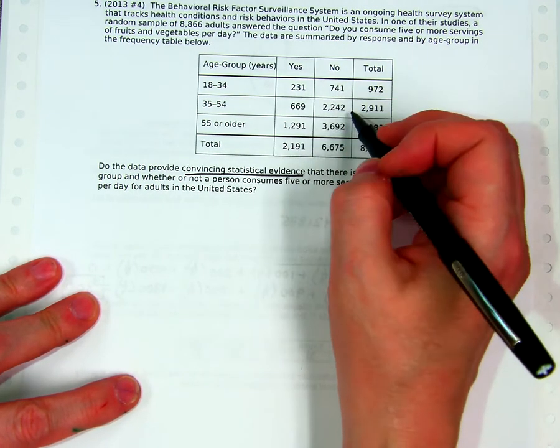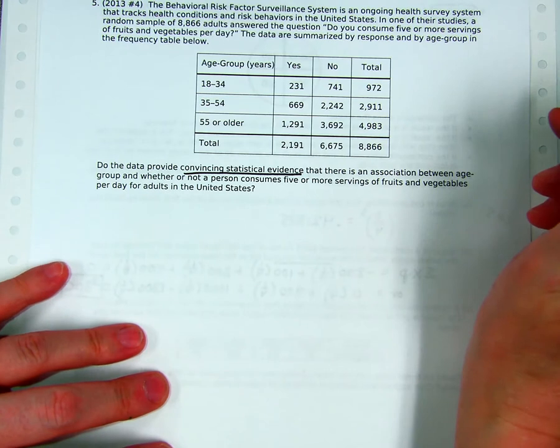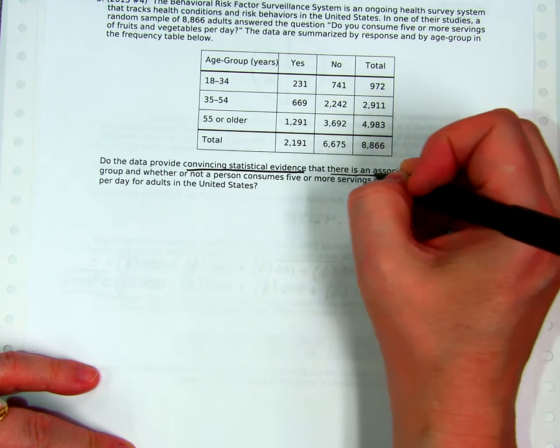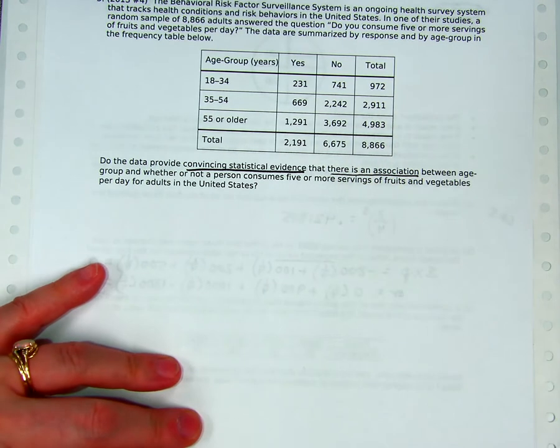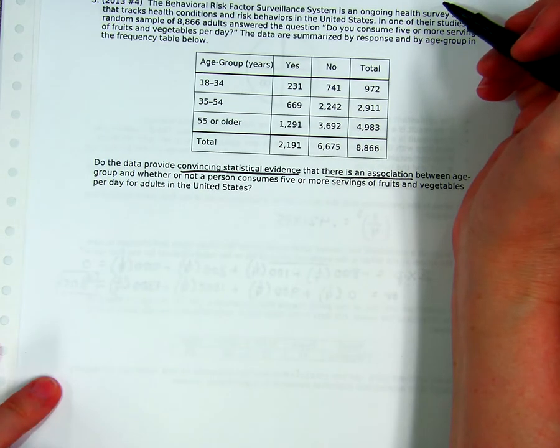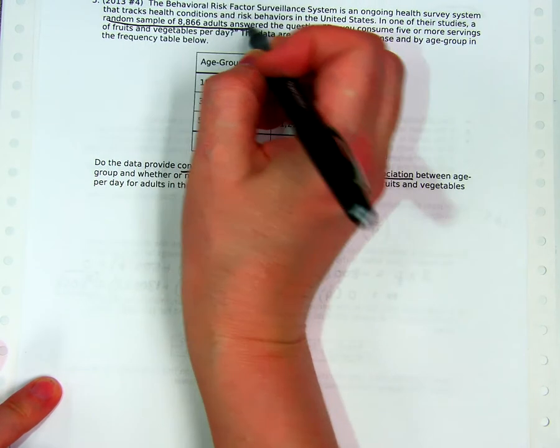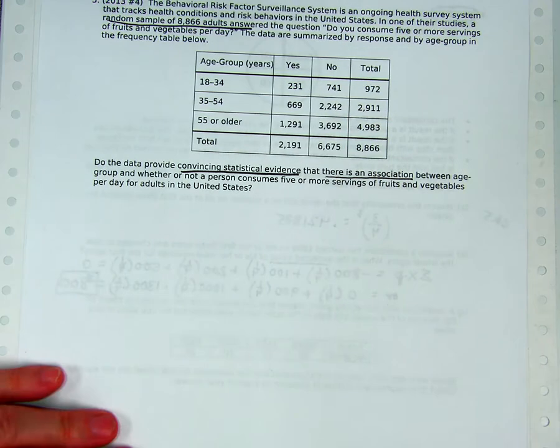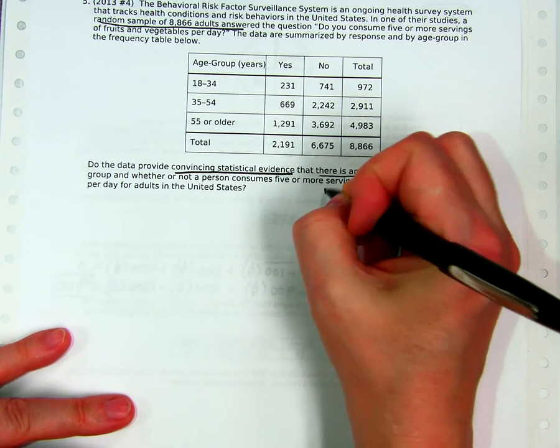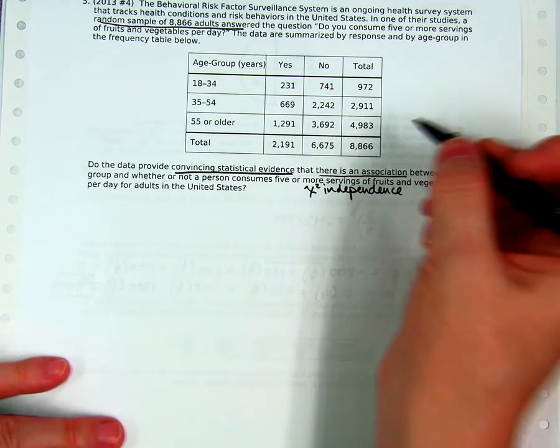This time since there's two categories, three categories here and two other categories there, two-way table means it's either homogeneity or independence. I'm going to look for clues in the problem about which type it is. Here's one of the clues: is there an association? That means it might be independence, but once in a while we use that word for homogeneity. So I'm also going to check and make sure they have one sample and two variables. Yes, we have a single random sample of this many adults and they were grouped by age and they're also grouped by their answer to the question. That is two variables and one population. It's independence. It's an independent chi-squared test.